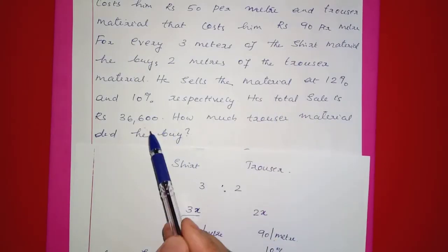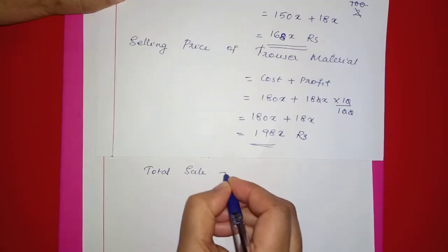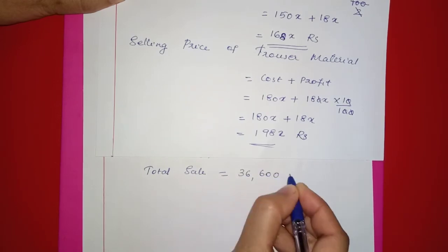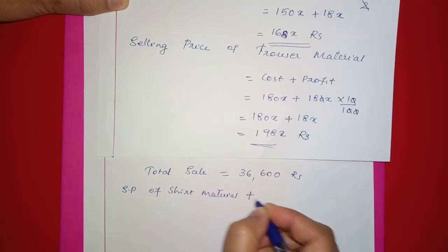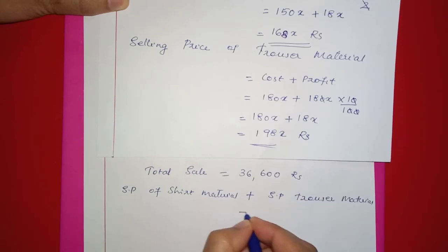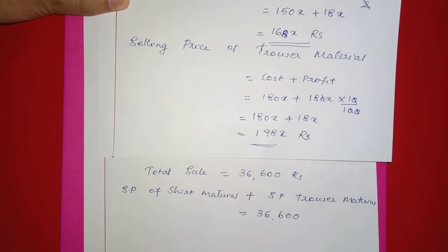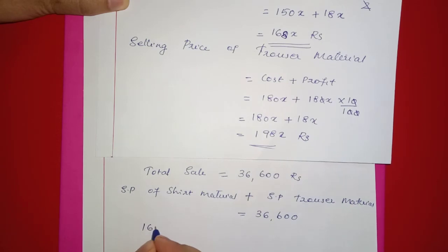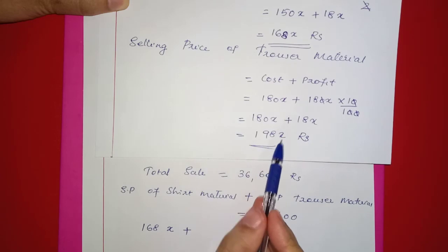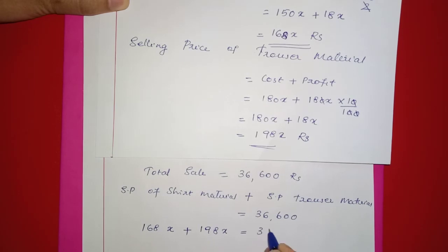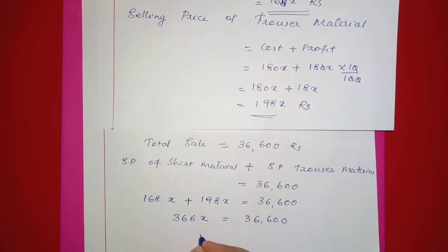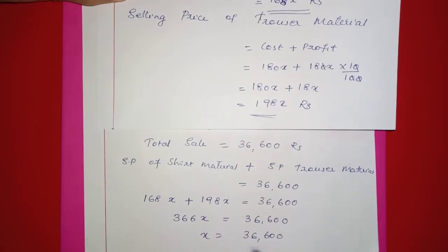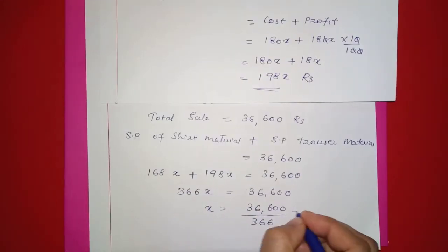The total sale is Rs.36,600. So the selling price of shirt material plus selling price of trouser material equals 36,600. That is 168x plus 198x equals 36,600. Adding gives us 366x equals 36,600, so x equals 36,600 divided by 366, which equals 100.